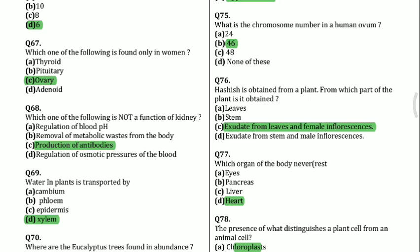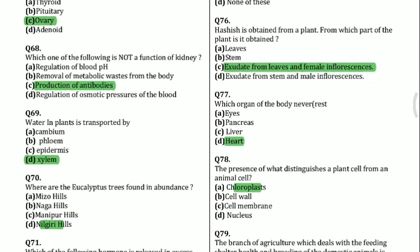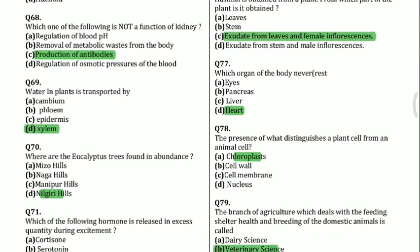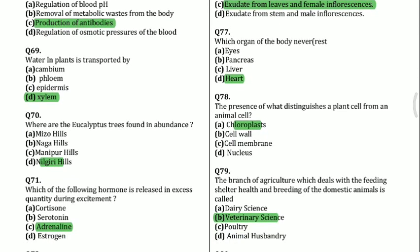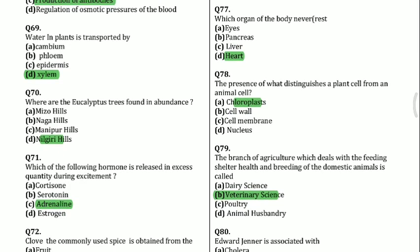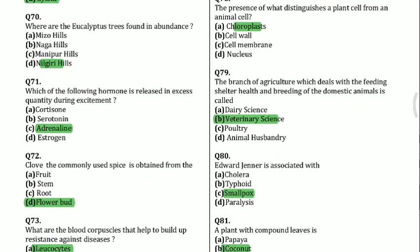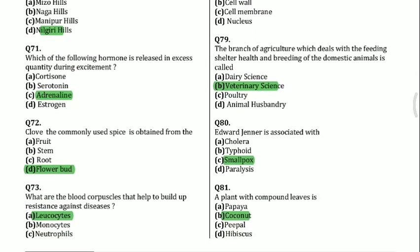Question 76: Hashish is obtained from a plant — from which part of the plant is it obtained? It is exuded from leaves and female inflorescence. Question 77: Which organ of the body never rests? Heart. Question 78: The presence of what distinguishes a plant cell from an animal cell? Chloroplasts. Question 79: The branch of agriculture which deals with the feeding, shelter, health and breeding of domestic animals is called veterinary science.